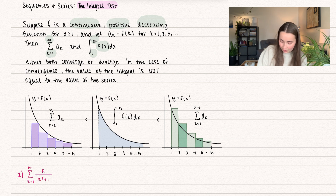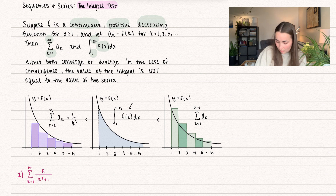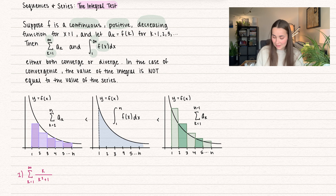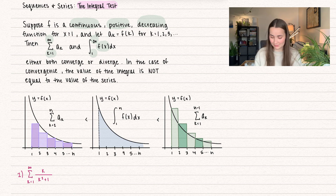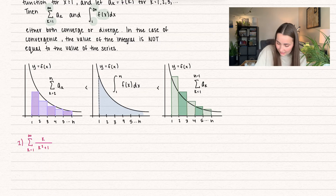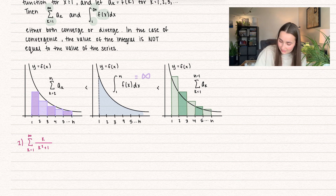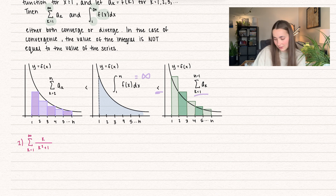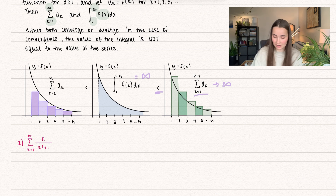Let's pretend our a sub k is equal to 1 over k squared. Then our function in this case would be 1 over x squared, and we're integrating the area between the bounds. We also have that this is going to be bounded between the left Riemann sum, which is where we're overestimating the area between the curve and the x-axis. So let's say our integral equals infinity — that means it diverges. Since the integral is less than our summation, that tells us our summation is greater than infinity, so this is also going to have to diverge. If the integral diverges, our summation diverges.